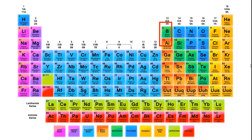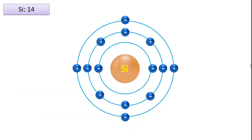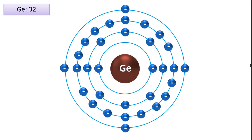The atomic number of silicon is 14 and germanium is 32. In other words, while silicon has 14 electrons in total, germanium has 32 electrons. When we look at the atomic structure of silicon, it has 2 electrons in its first orbital, 8 in its second orbital, and 4 in its last orbital. When we look at the atomic structure of germanium, it has 2 electrons in its first orbital, 8 in its second orbital, 18 in its third orbital, and 4 in its last orbital.